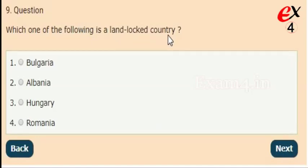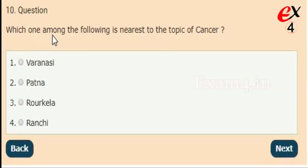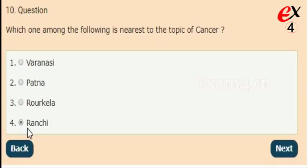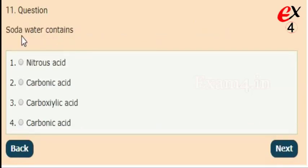Next: which of the following is a landlocked country? Options: Bulgaria, Albania, Hungary, Romania. The right answer is option 2, Albania. Next: which one among the following is nearest to the Tropic of Cancer? Options: Varanasi, Patna, Rourkela, Ranchi. The right answer is option 4, Ranchi.